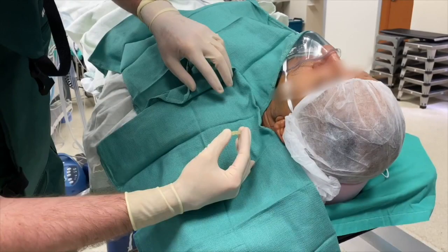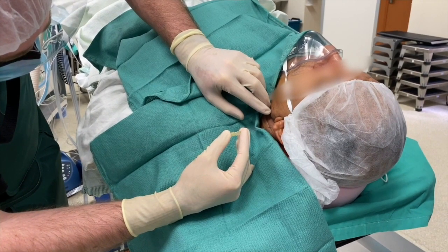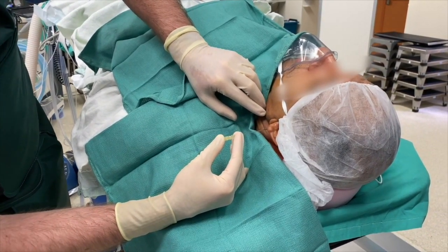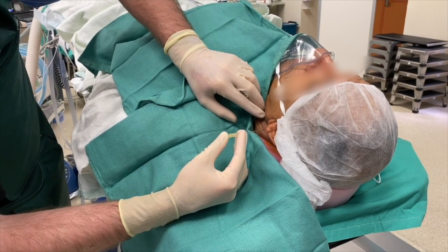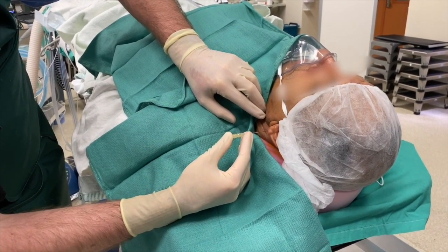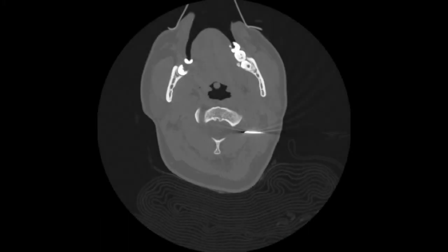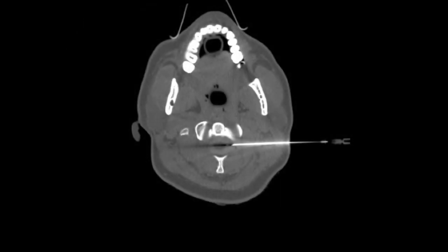Prior to needle insertion, local anesthetic with 2% lidocaine is infiltrated into the entry point. A 20-gauge spinal needle is inserted into the skin and soft tissue just inferior to the mastoid tip, to a depth less than the distance to the dura. Serial CT scans are obtained to confirm appropriate trajectory and estimate additional distance. The trajectory is adjusted as needed as the needle is advanced toward the subarachnoid space. Just prior to puncture of the dura, 2 milliliters of 2% lidocaine may be injected to avoid pain secondary to the C2 ganglion and dura.